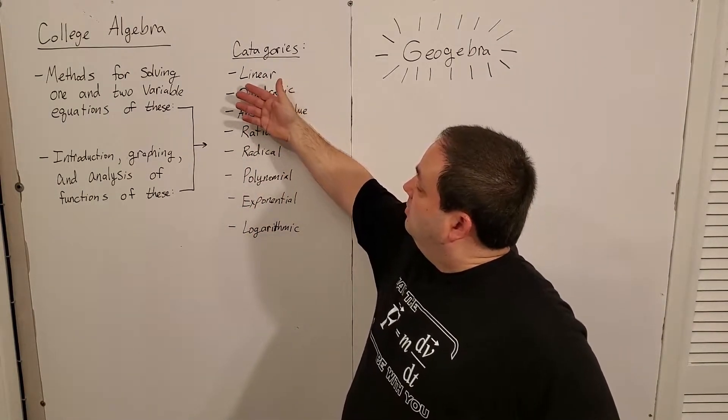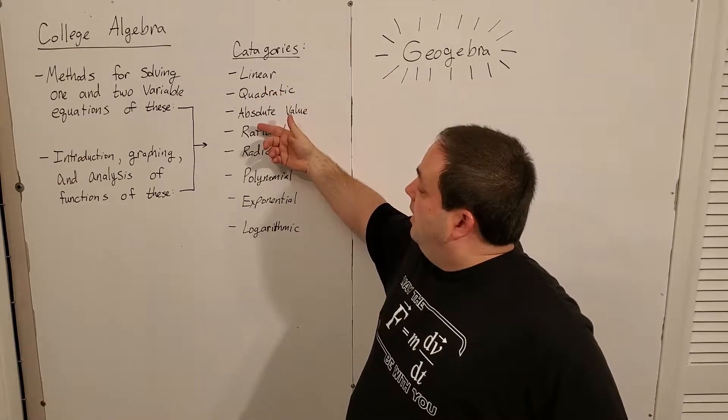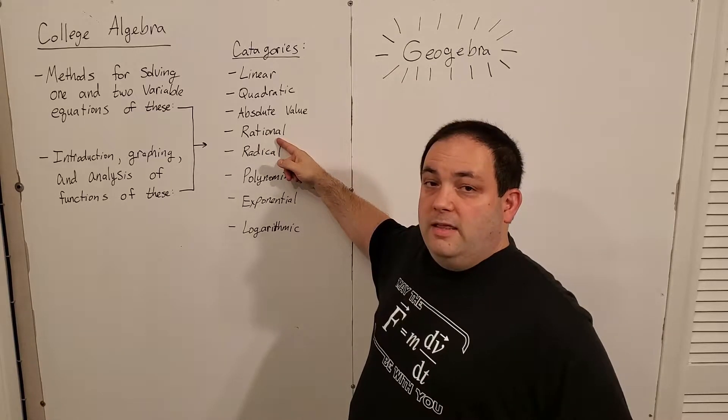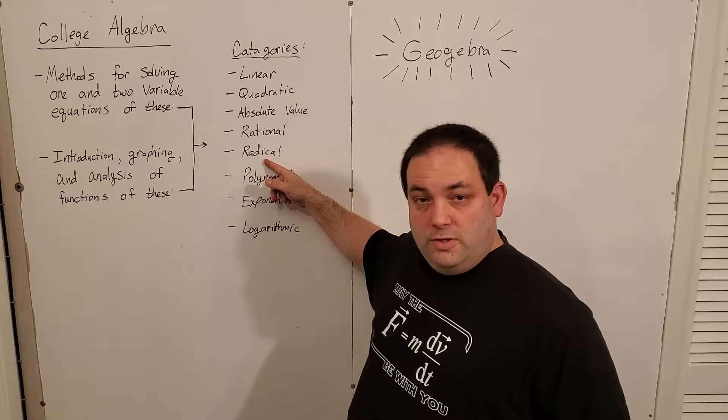And these are linear, quadratic, absolute value, rational. Now, rational means anything fractional. Radical, so you've got square roots, third roots.